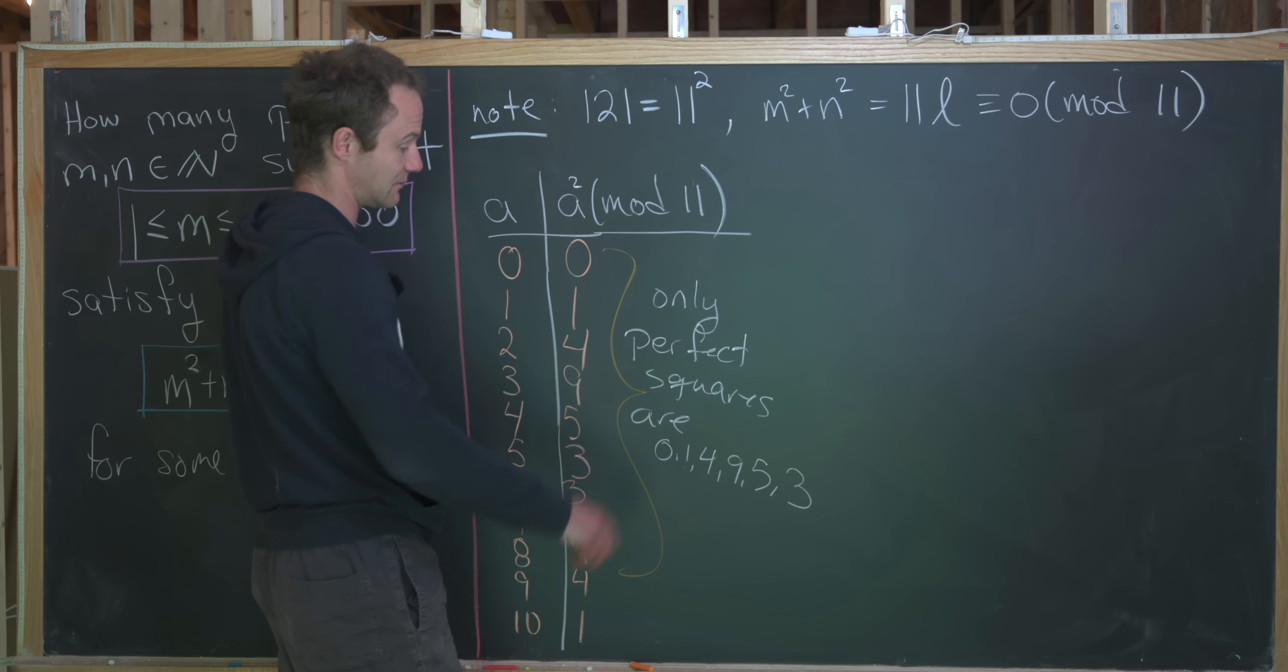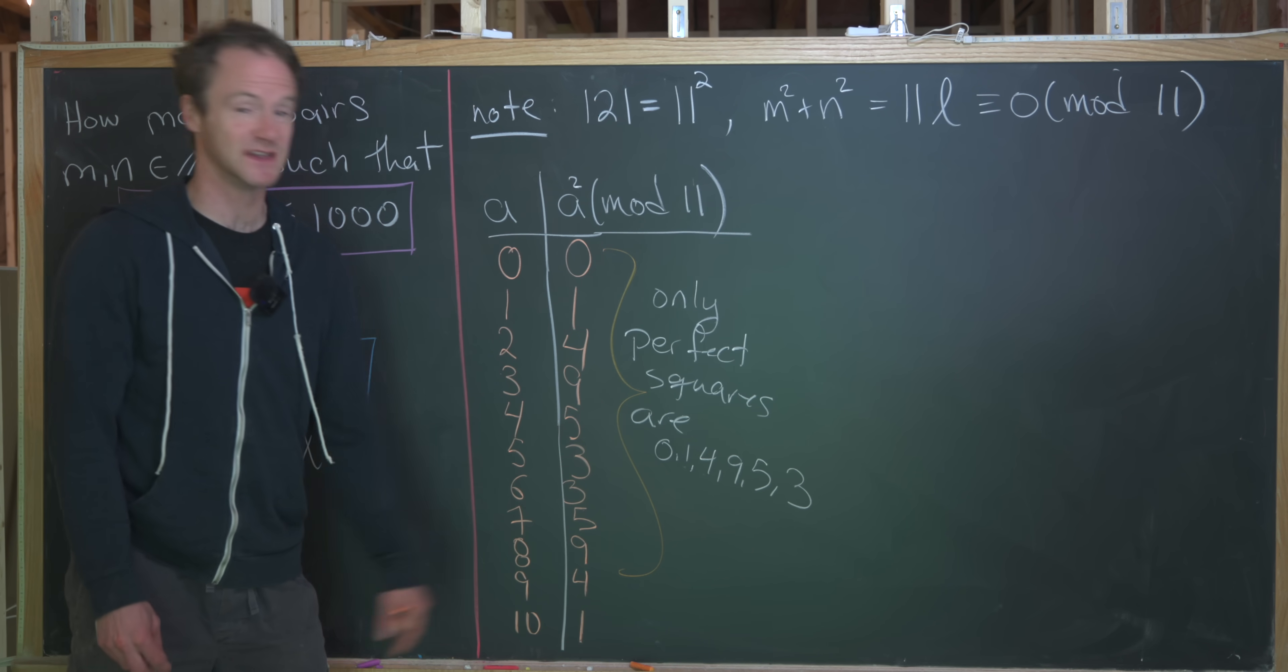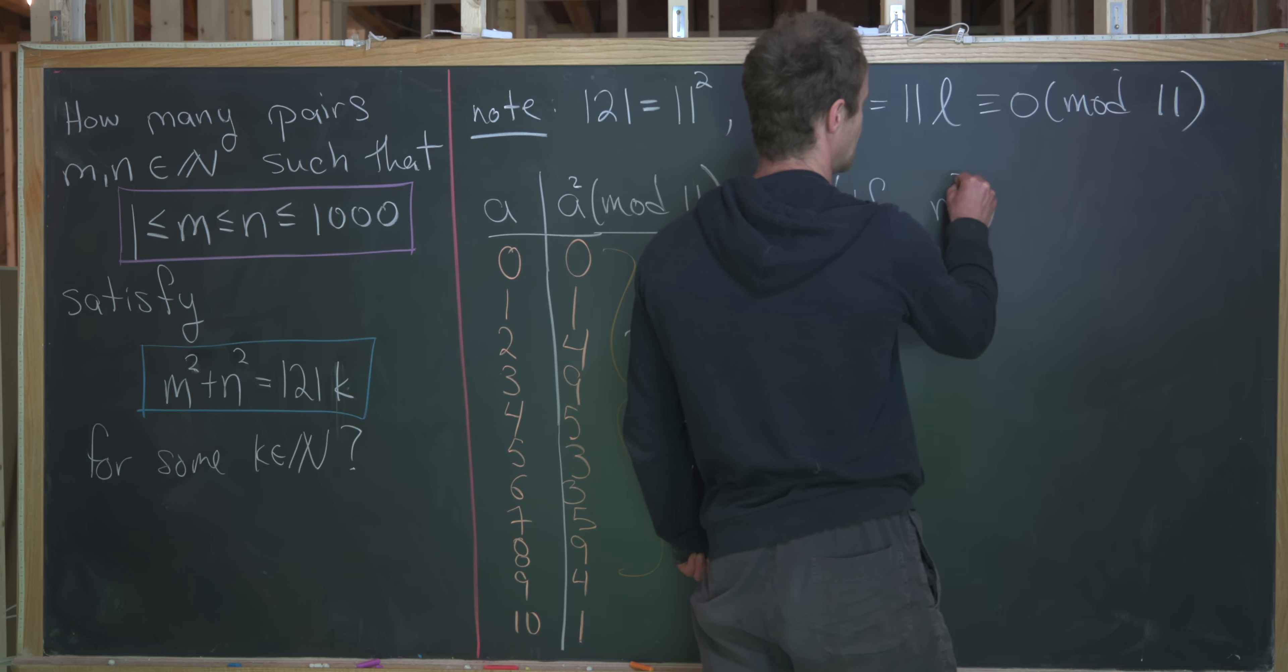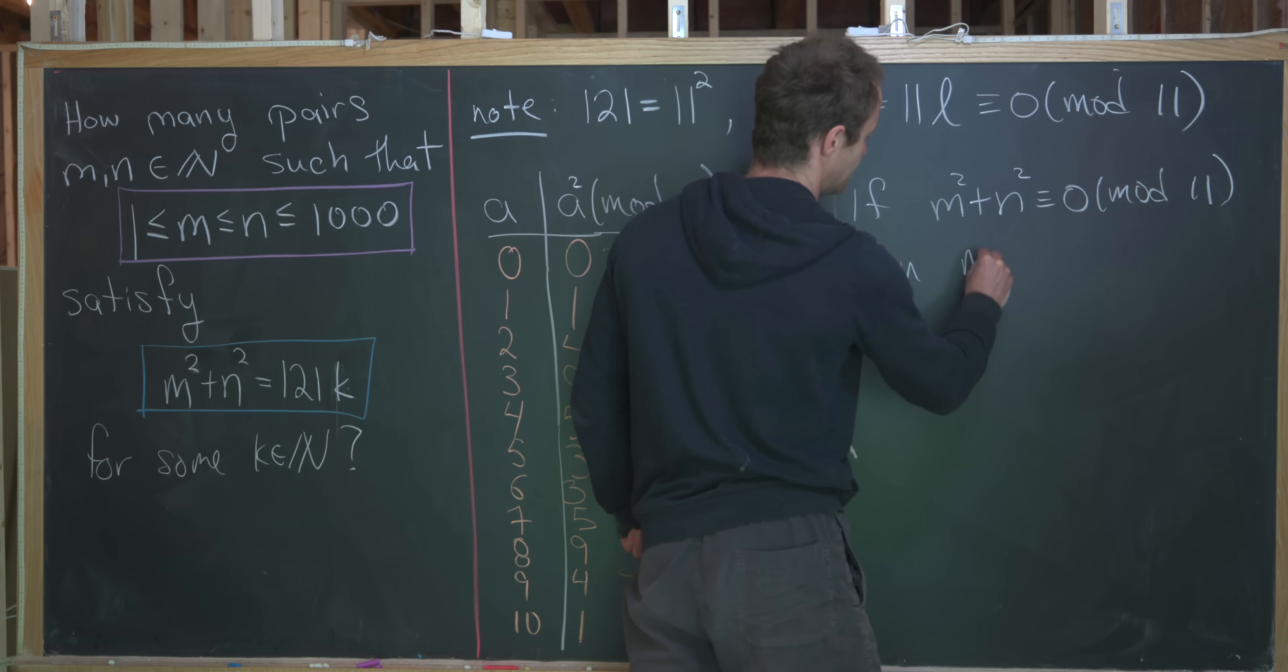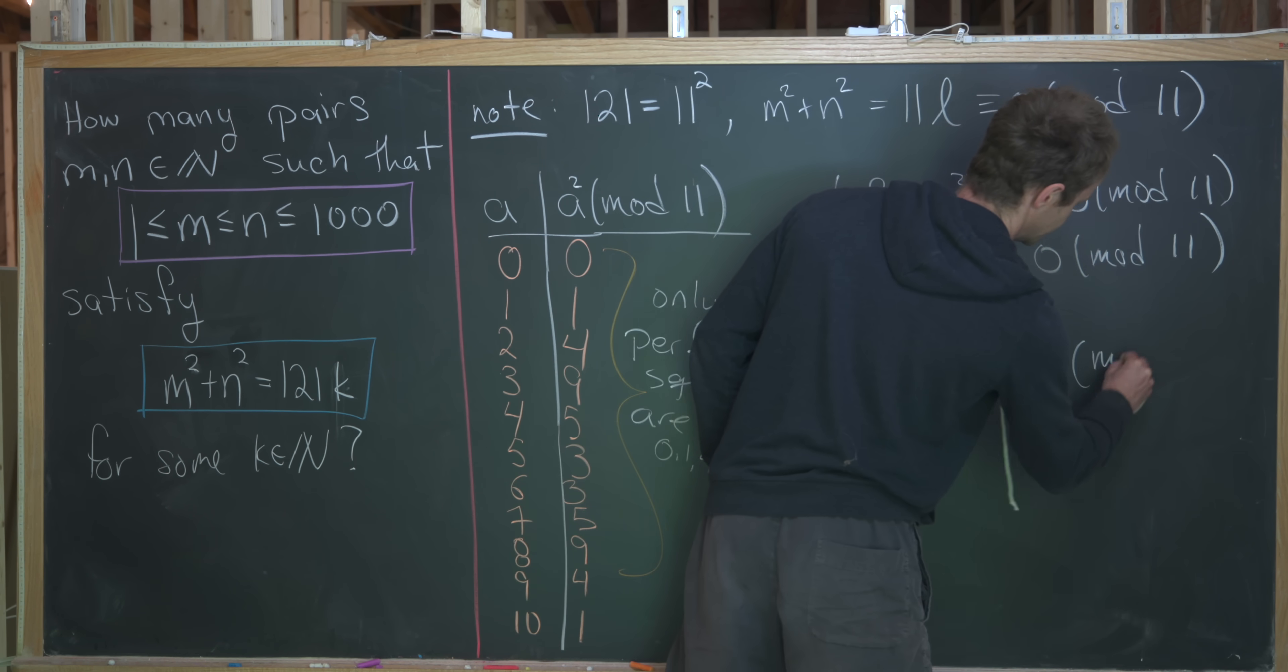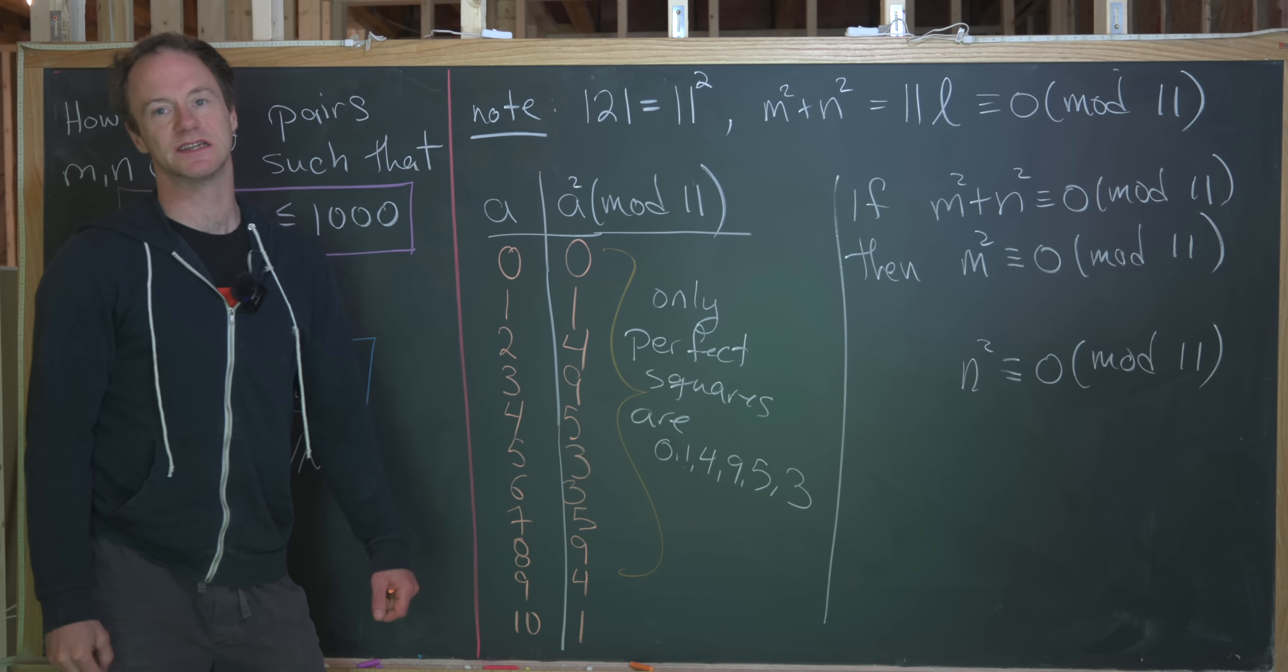But there's only one way to do that, and that is if each of the numbers from this list is 0. Notice any other pairing will not give us a multiple of 11. 1 plus 4 is 5, that's not a multiple of 11. 9 plus 3 is 12, that's not a multiple of 11. The only way to get a multiple of 11 is with 0 plus 0, which is 0 times 11. So let's summarize that over here.